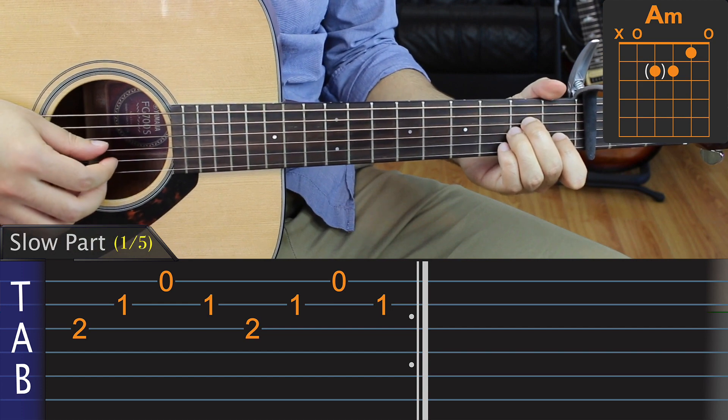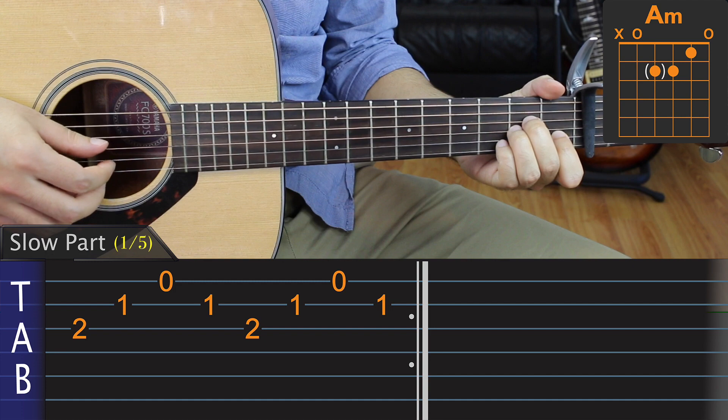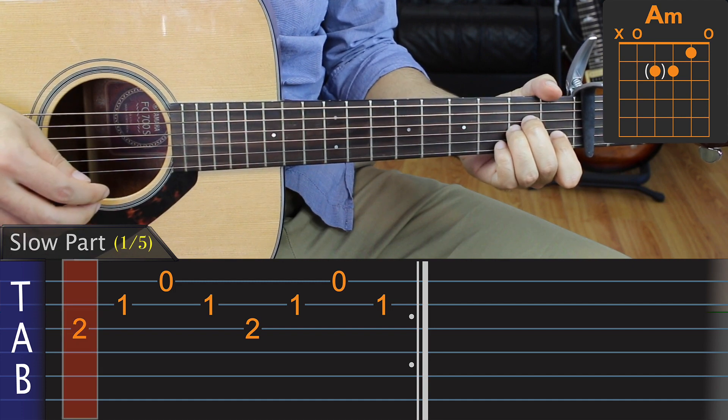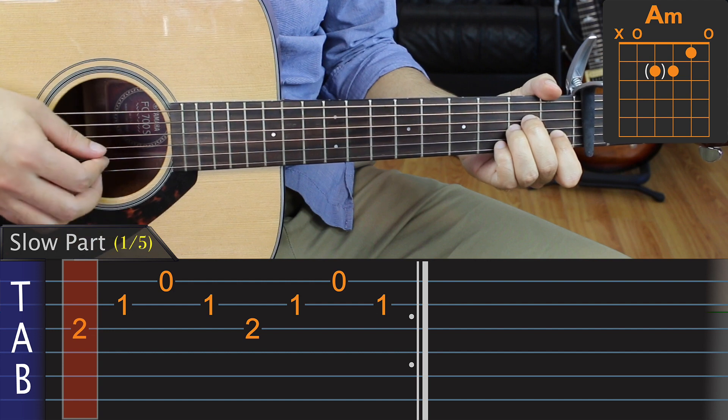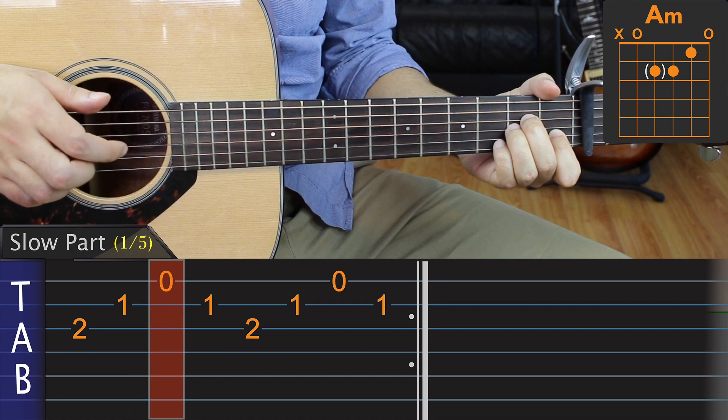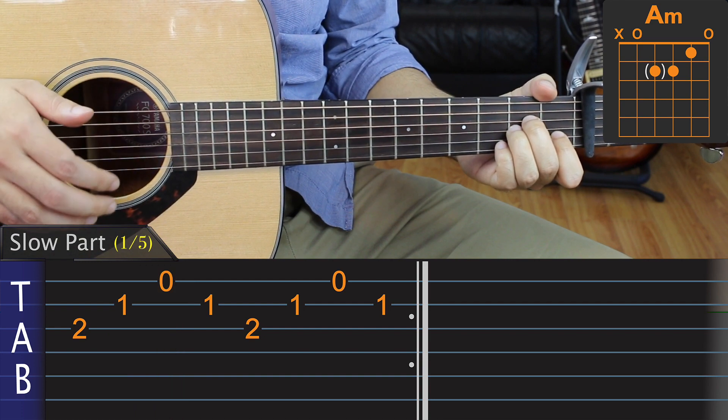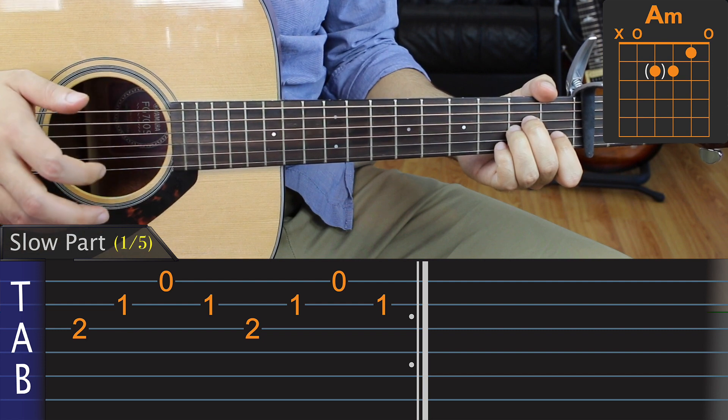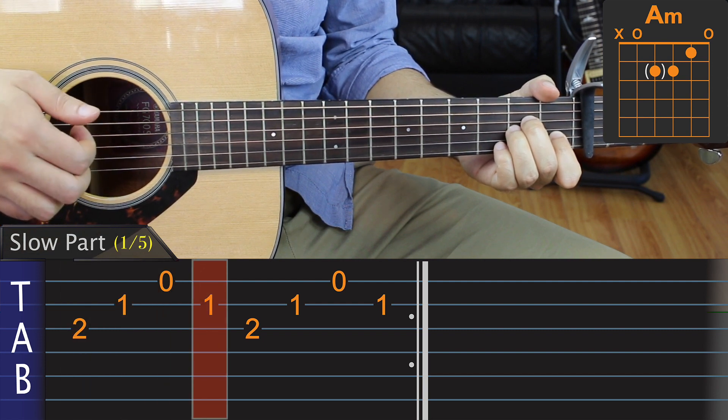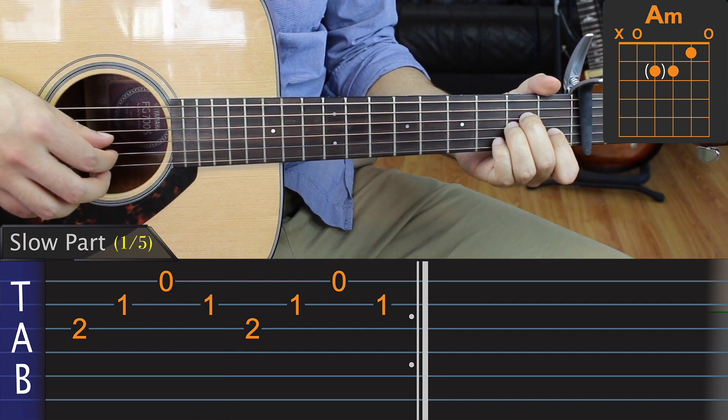We'll start by forming an A minor chord with our left hand. Once our chord is in place, we can focus on our picking hand. I'm going to be using my thumb to play the G, my index to play the B, and my middle finger to play the high E string. The picking pattern is pretty simple. It's going to be thumb, index, middle, index. When we repeat that sequence four times, it should sound like this.